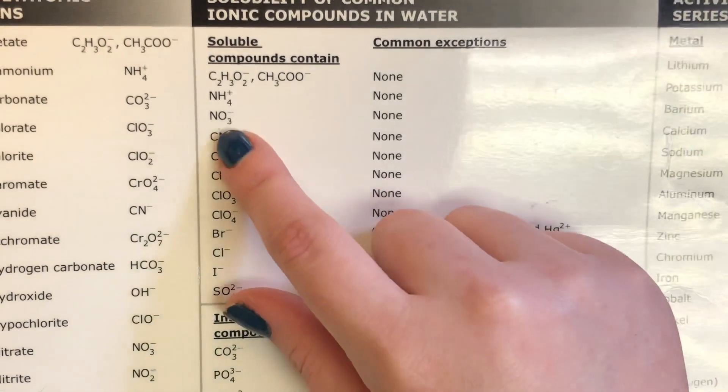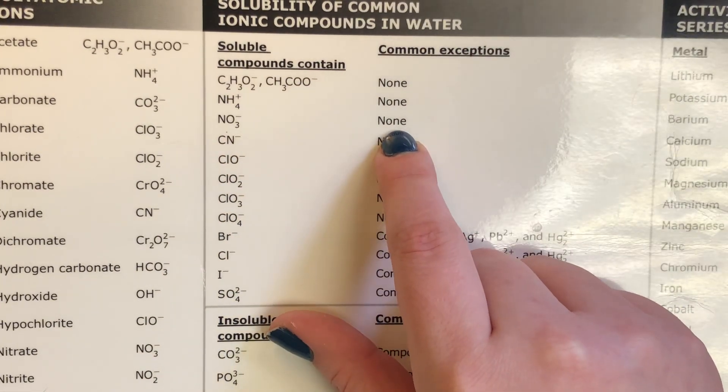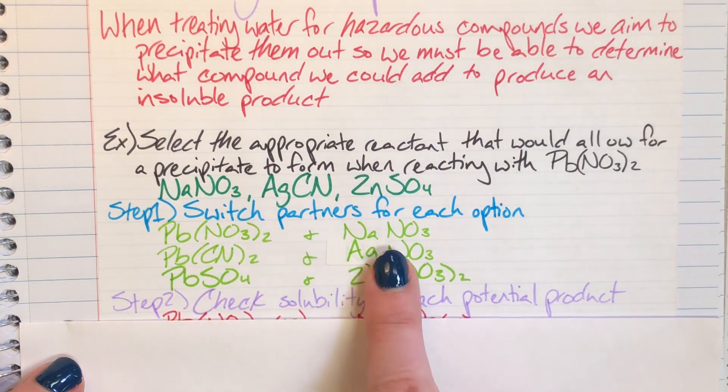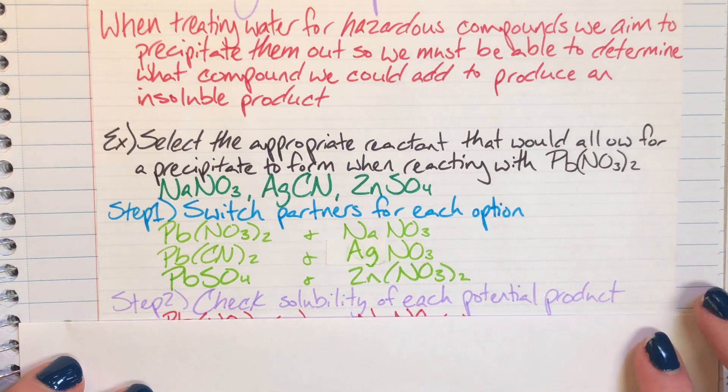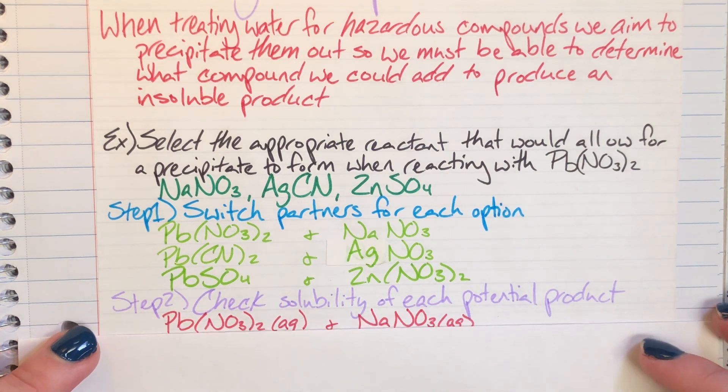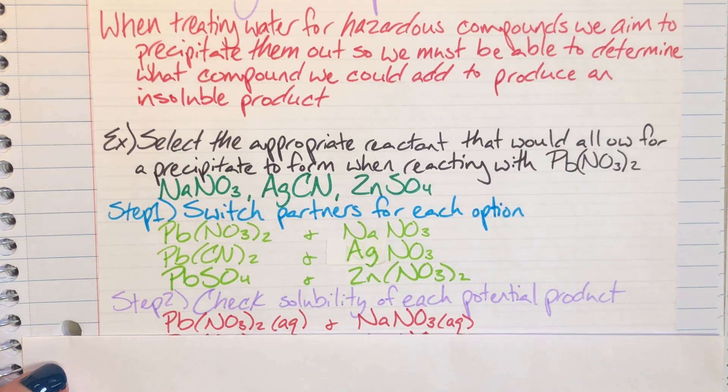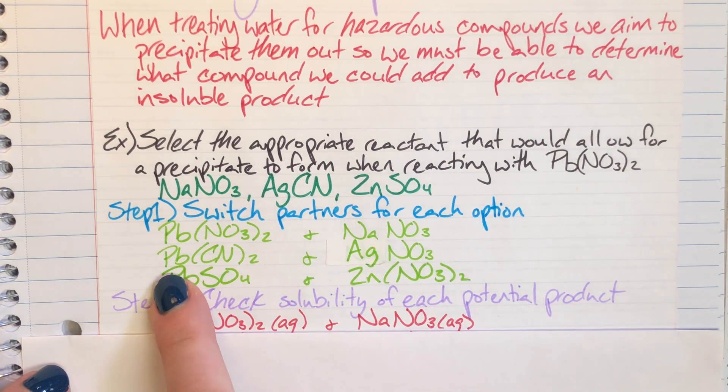I will check nitrate and I see that nitrate is always soluble, so for both the lead(II) nitrate and the sodium nitrate, since both of them have the same anion and nitrates are always soluble, I know that both of these compounds are also still soluble. So not what I wanted.